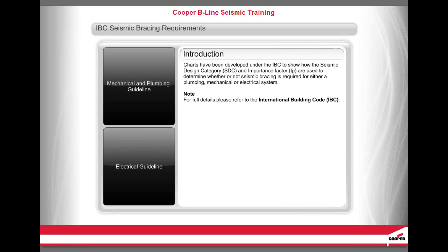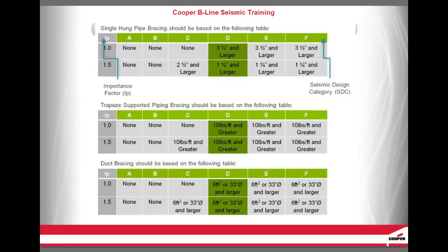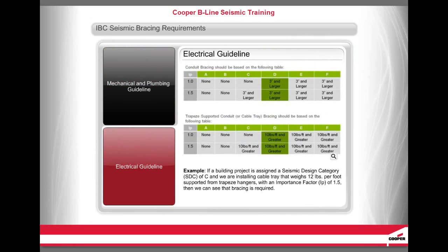Charts have been developed under the IBC to show how the seismic design category, SDC, and importance factor I sub P are used to determine whether seismic bracing is required for plumbing, mechanical, or electrical systems. For full details, refer to the IBC. For example, if a building project has been assigned an SDC of C and a mechanical system of 3-inch single-hung pipe with an I sub P of 1.5 is being installed, bracing is required. Similarly, if the SDC is C and cable tray weighing 12 pounds per foot is supported from trapeze hangers with an I sub P of 1.5, bracing is also required.